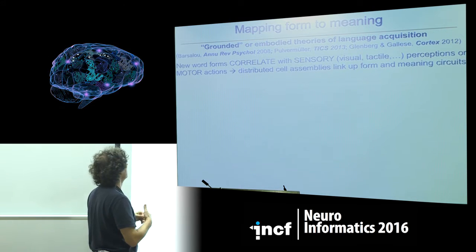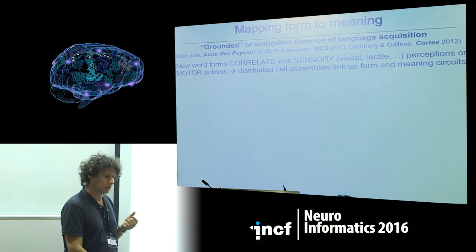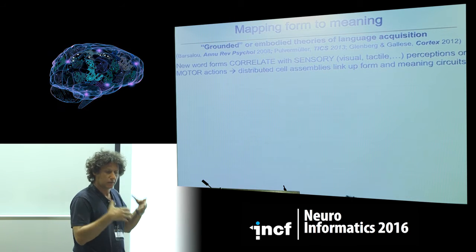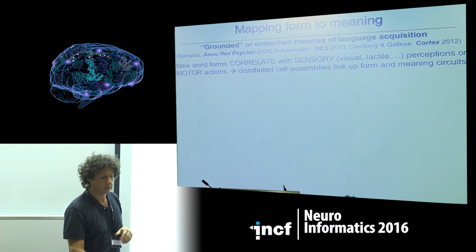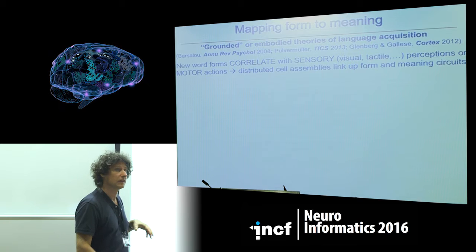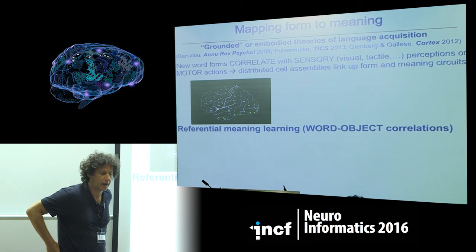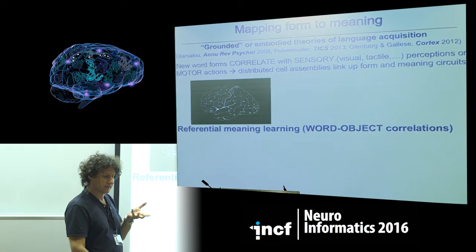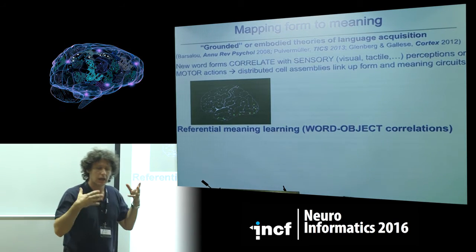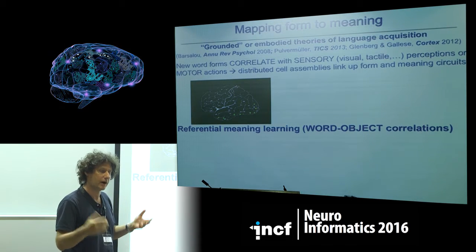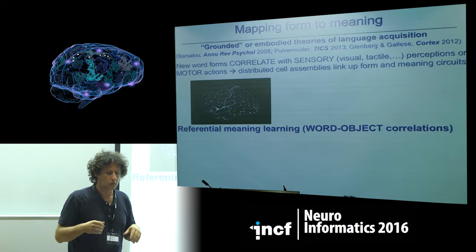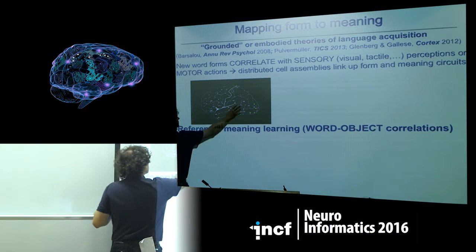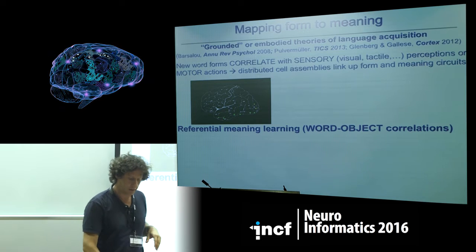When a new word form emerges in the brain, its activation correlates with the presence of sensory perception or motor action. These distributed cell assemblies link up with corresponding activities in the sensory or motor cortices. For example, when we learn the meaning of a word with a strong visual component, the use of the word co-occurs with the presence of the object in the environment. The identity of the object is represented in the ventral visual stream.